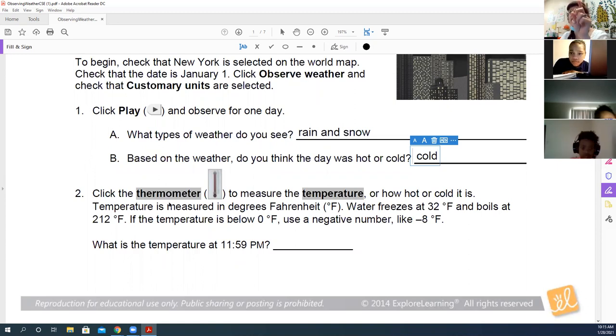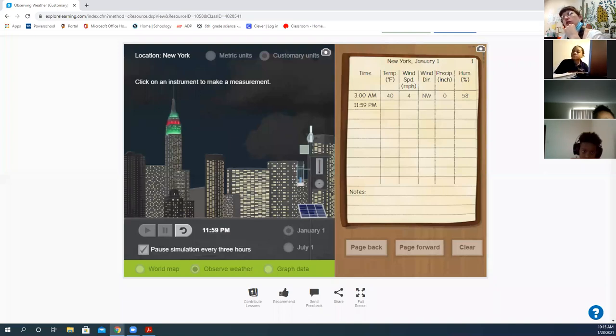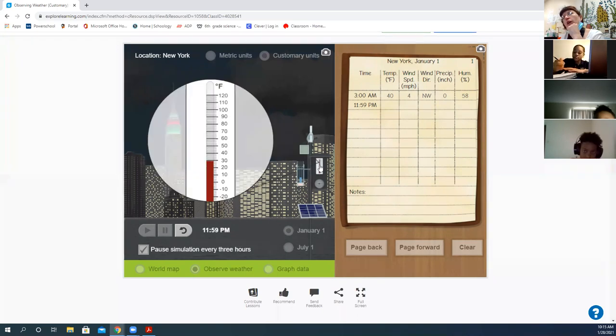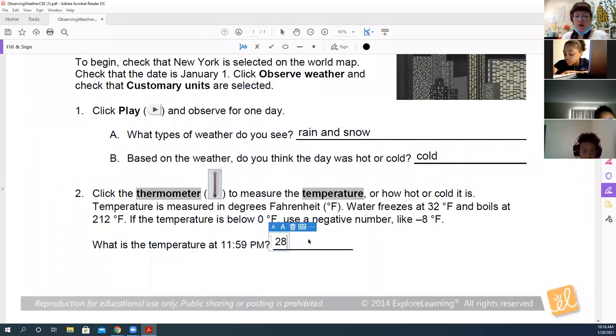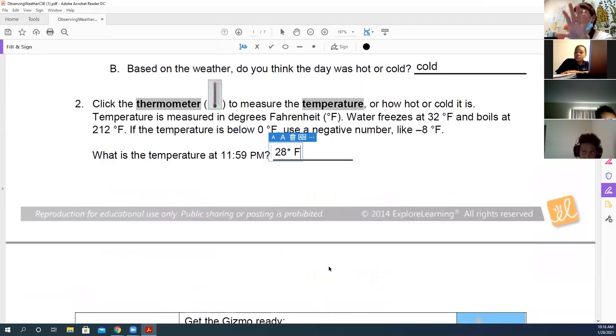And it wants us to record the temperature. It says, click the thermometer, measure the temperature or how hot or cold it is. Temperature is measured in degrees Fahrenheit. We know that water freezes at 32 degrees Fahrenheit and boils at 212 degrees. If it's below zero degrees Fahrenheit, use negative numbers. So we're going to go back and we're going to look at what our temperature is. So I'm going to click on what tool? The thermometer and what temperature is it? No, it's slightly under 28. So I'm going to go back to my paper. And I'm going to write 28 degrees. I can't do a degree sign. So I'm just going to do the little star. And make sure I'm using Fahrenheit because we're doing customary units. What would the degree be? Does anybody know what degree would be if it was in Celsius? Yeah. Does everybody understand what you're doing here? Okay.